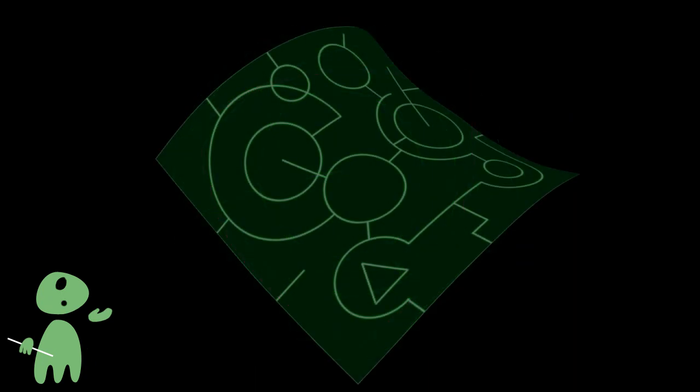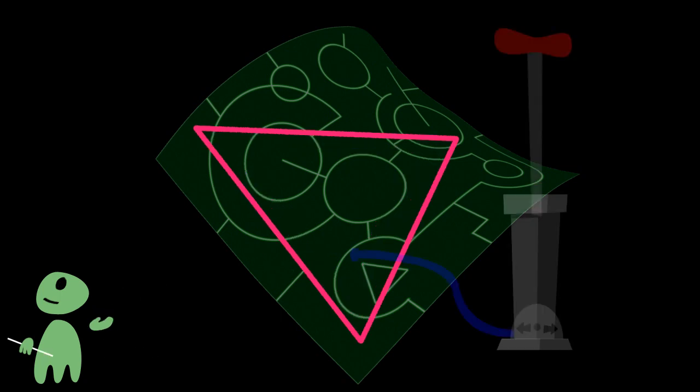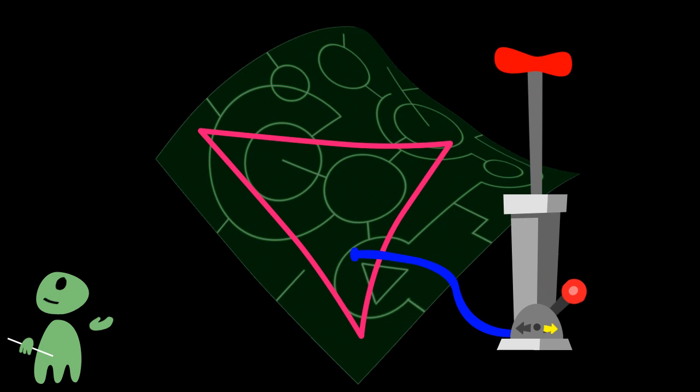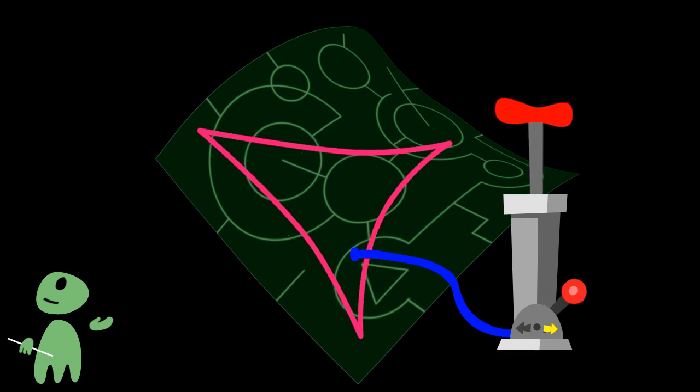But what about a negatively curved surface, a saddle surface? Here, the opposite happens, the angles are inferior to what you might expect. Think of negative curvature as underpressure which gives the triangles an evacuated shape and makes corners pointier.